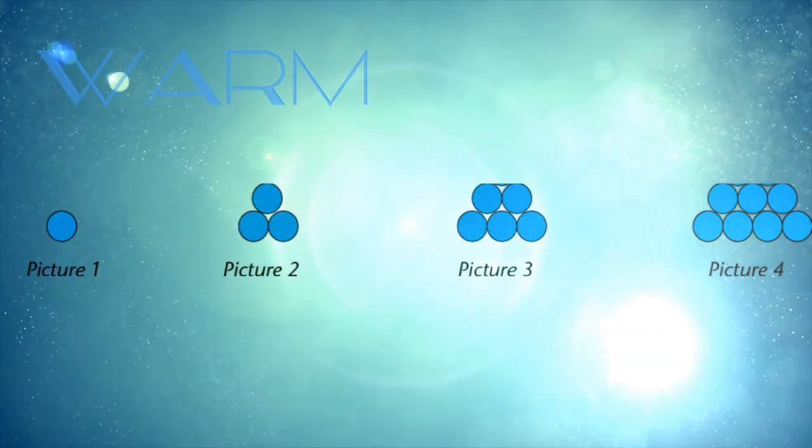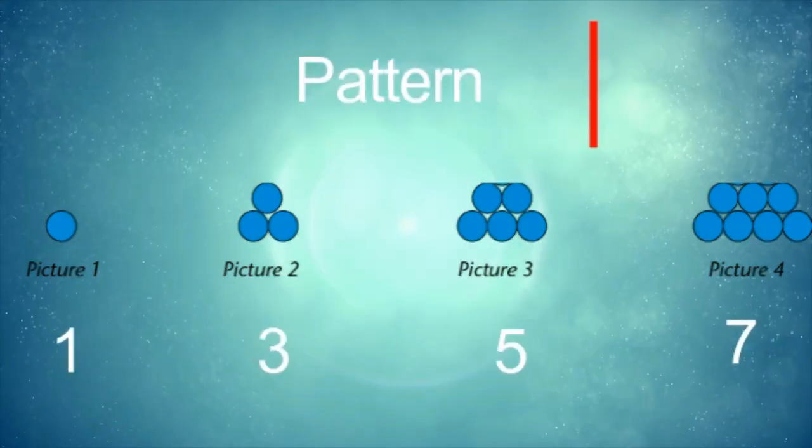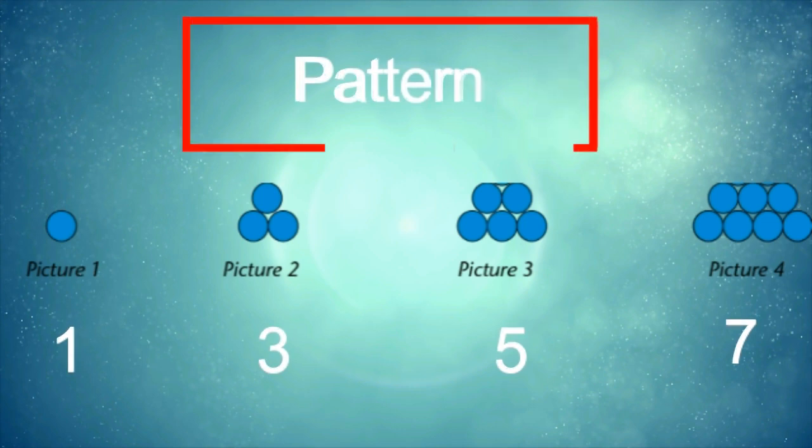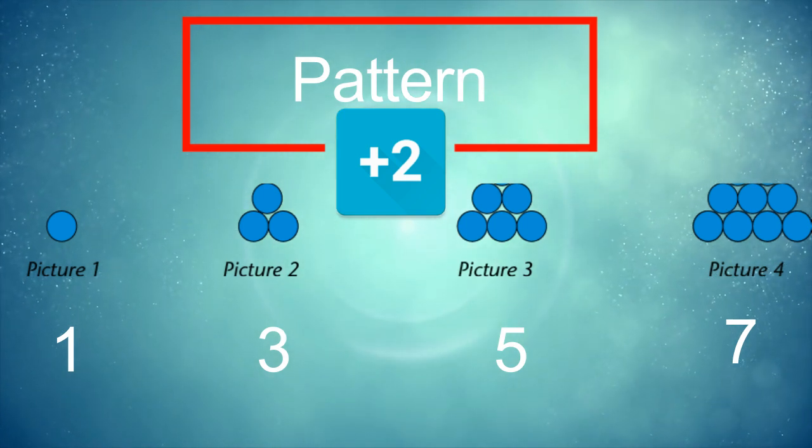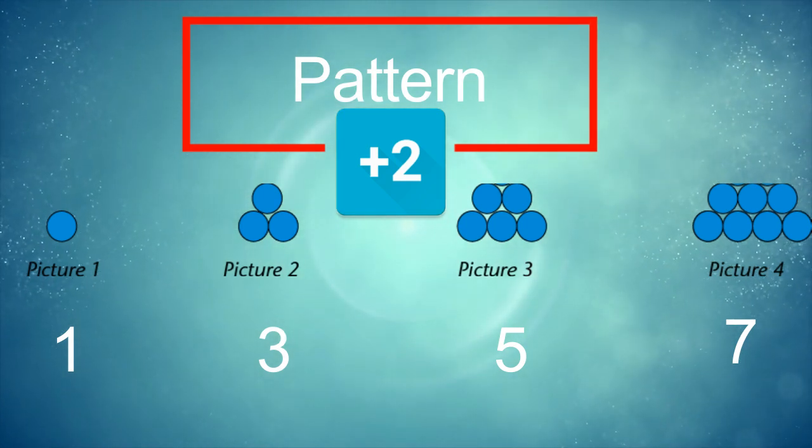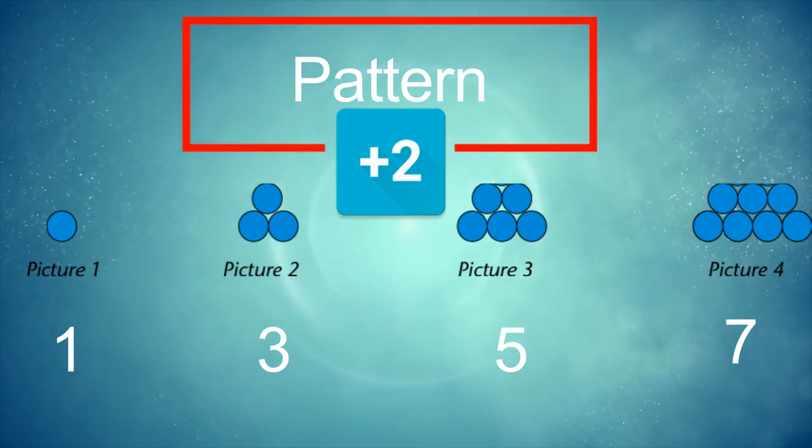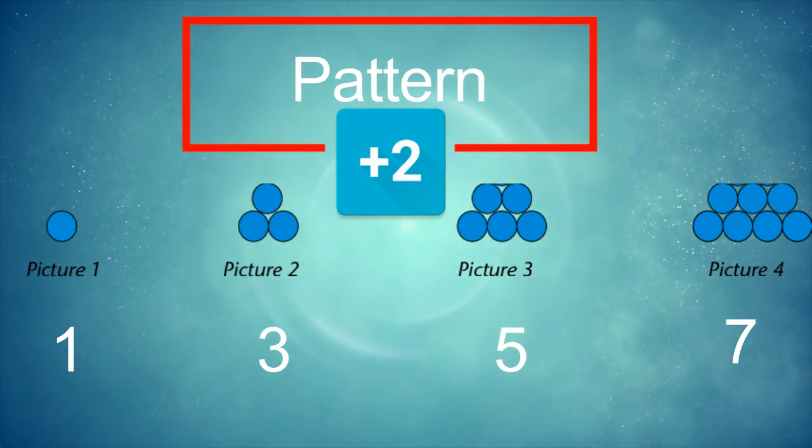In this example, as you see we have a pattern: one circle, three circles, five circles, seven circles. Can you describe this pattern? Yes teacher, I can. We are adding two every time. Excellent. So one plus two equals three, three plus two equals five, and so on.